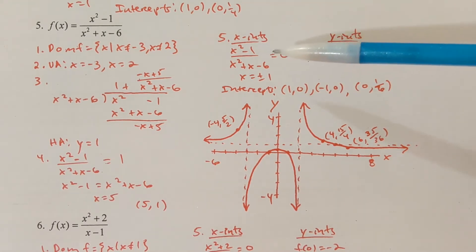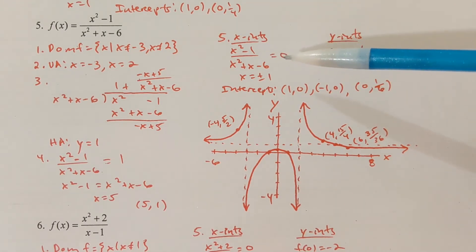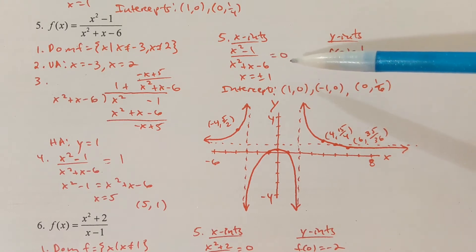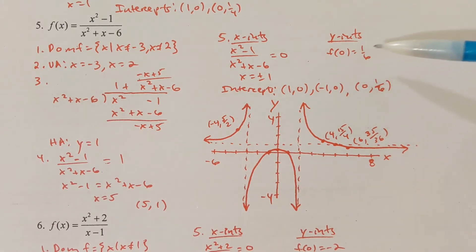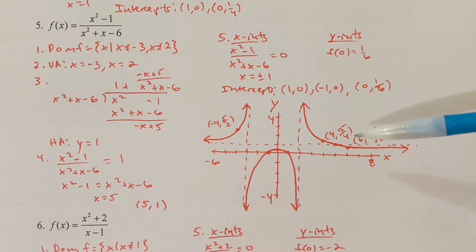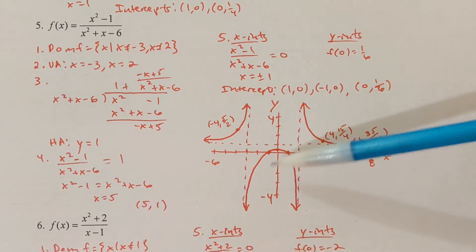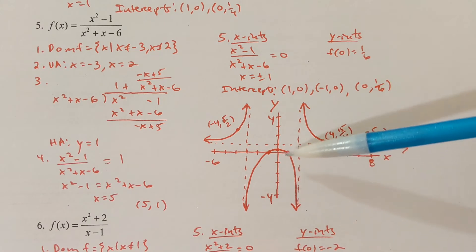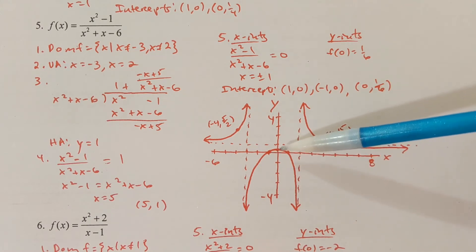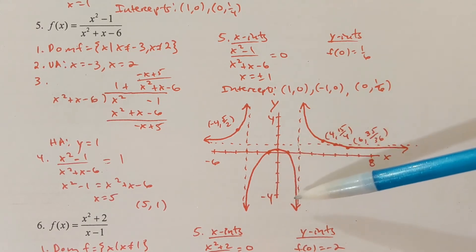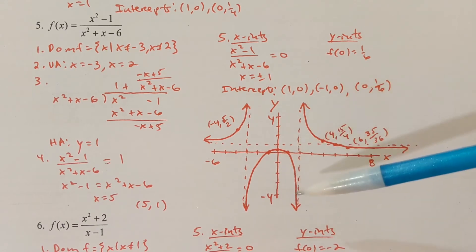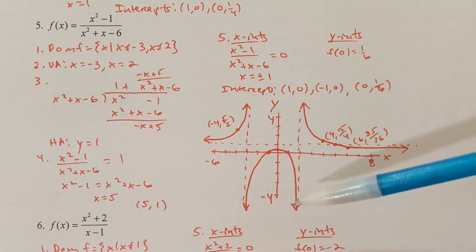To find the x-intercepts, set the function equal to zero and solve: x squared equals 1, so x equals plus or minus 1. f of 0 equals 1/6, so (0, 1/6) is on the graph. The middle section contains the points (1, 0), (negative 1, 0), and (0, 1/6), all located in the lower region between the asymptotes.